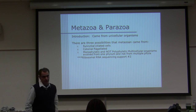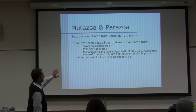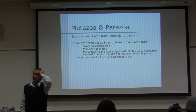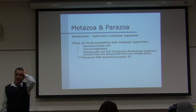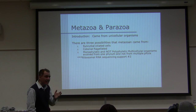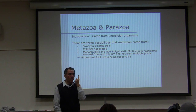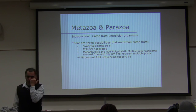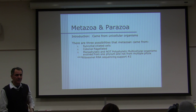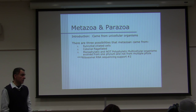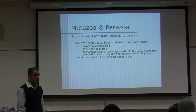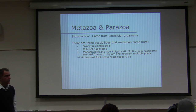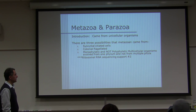There are three theories. One theory involves syncytial ciliated cells like Paramecium, which has more than one nucleus. Syncytial means cells that have more than one nucleus — like your skeletal muscle, which is considered a syncytial cell.